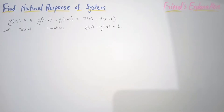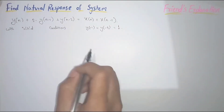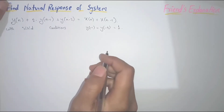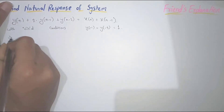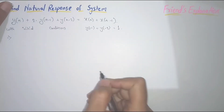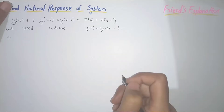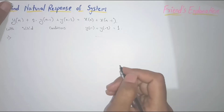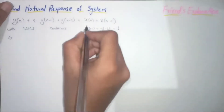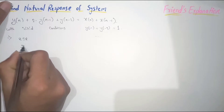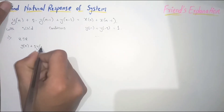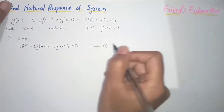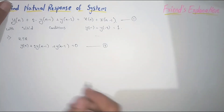You will get to know how the solution of the homogeneous equation differs with respect to the nature of the roots. Now let's discuss a question. As I already told you, they will give some initial conditions in the question — there is no need to worry about it. To find the natural response of the system, the input should be equal to zero and the initial conditions should be considered. So setting the input to zero, the equation will become: y(n) minus 2·y(n-1) plus y(n-2) equals zero. Let's consider this as equation 2.